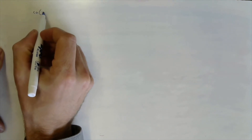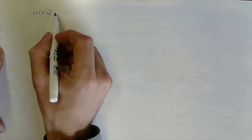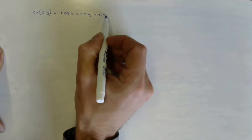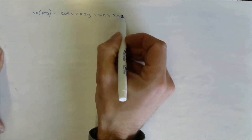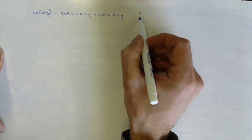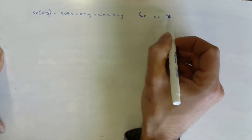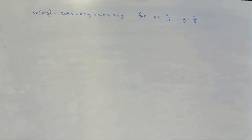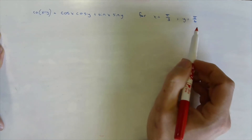Example 7 in your notebook says: show that the cosine subtraction formula — cosine of x minus y equals cosine of x times cosine of y plus sine of x times sine of y — for x equals pi over 3 and y equals pi over 6. All we're doing is verifying that the subtraction formula for cosine is actually true for specific angles.